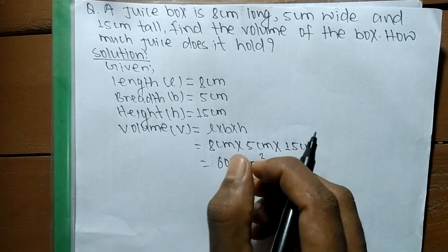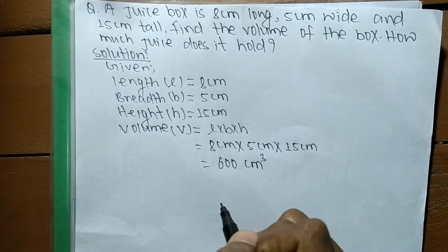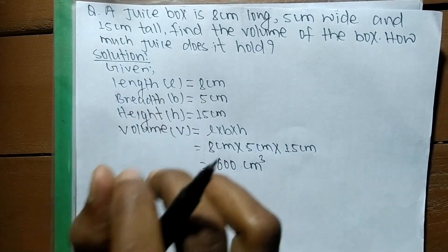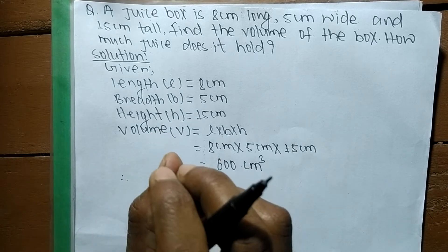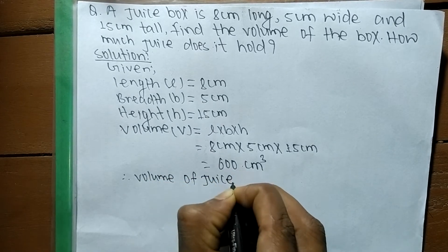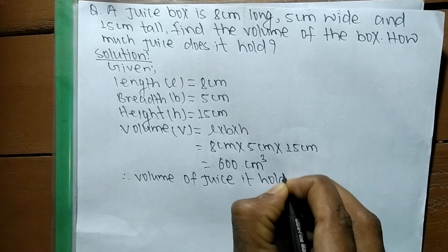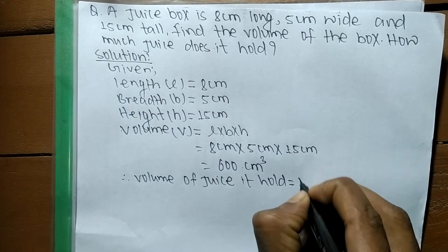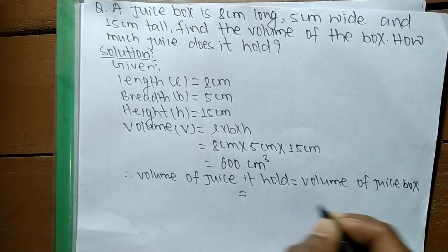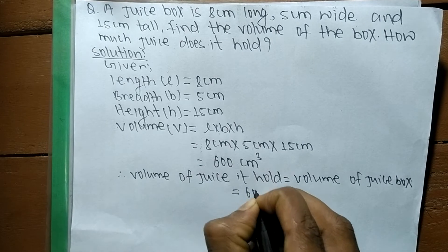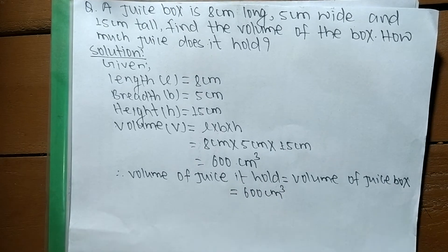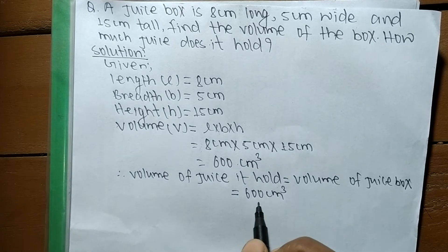So the volume of the juice box is 600 centimeters cubed. Now we have to find out the amount of juice it can hold. When there is an object, its volume is equal to the total amount of anything it can hold. So the volume of juice held by the juice box is equal to the volume of the juice box, which is 600 centimeters cubed.